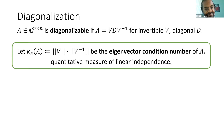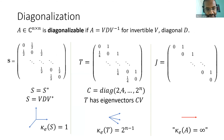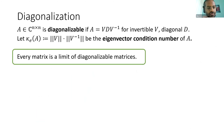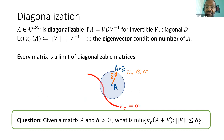This is a quantitative measure of how linearly independent the eigenvectors are. In our examples, the first matrix has eigenvector condition number one because its eigenvectors are orthonormal. The second matrix has eigenvector condition number two to the n minus one, which is much bigger. For the Jordan block it's not defined, but in some sense it's infinity. The question this talk addresses is: given a matrix and some parameter delta, can we find a nearby perturbation of norm at most delta such that the perturbed matrix has a small eigenvector condition number?